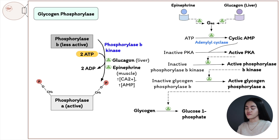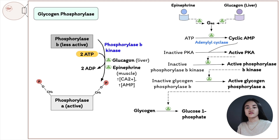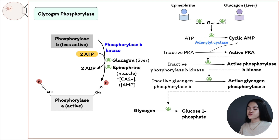Increased AMP signals that we have lower ATP levels, so we need to stimulate pathways that produce energy — in this case, glycogen mobilization. Another activator is calcium, which supports muscle contraction and binds to phosphorylase b kinase to trigger the phosphorylation of phosphorylase b to phosphorylase a, activating it.